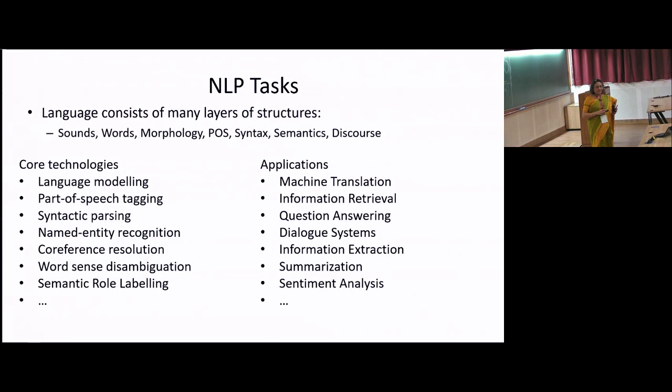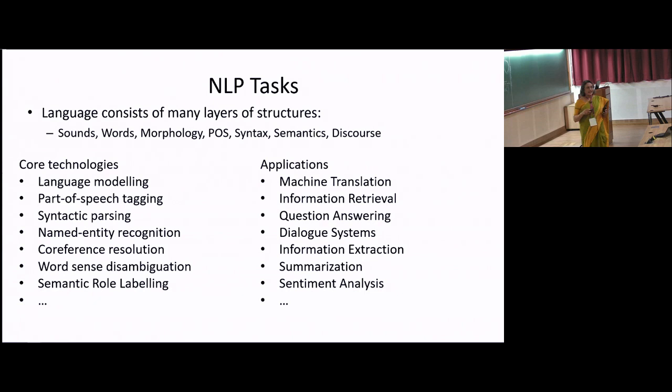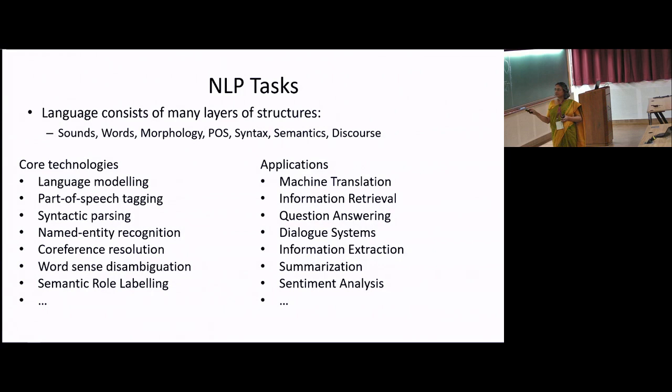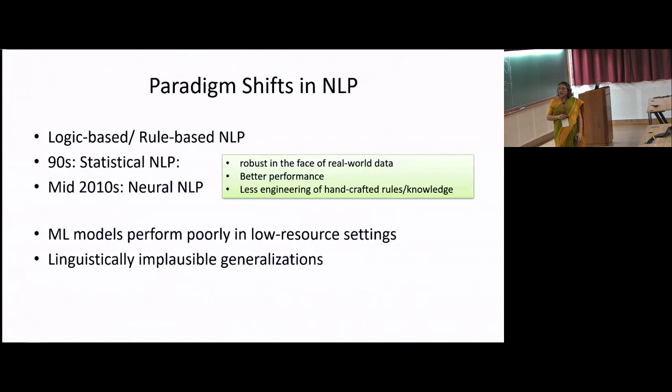In classical NLP, language has different layers, starting from sound to the word level, morphology, part of speech, syntax, and semantics. There are various core technologies such as language modeling, part-of-speech tagging, parsing, and semantic role labeling. There are also different applications, some of which use these low-level systems. Now there are many applications which do not use the full stack of models. These include machine translation, information retrieval, question answering, dialogue systems, information extraction, and summarization.